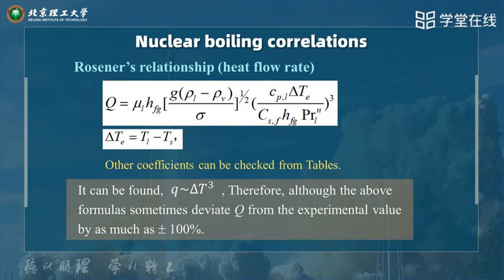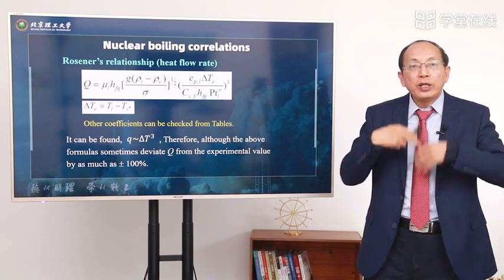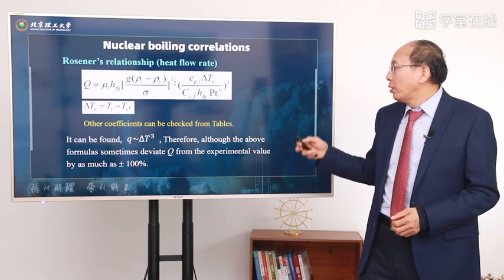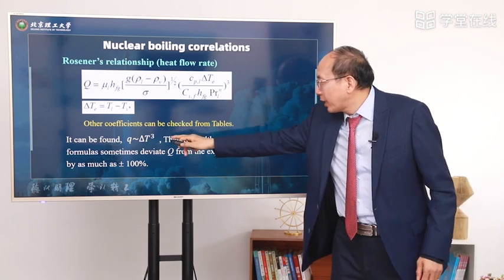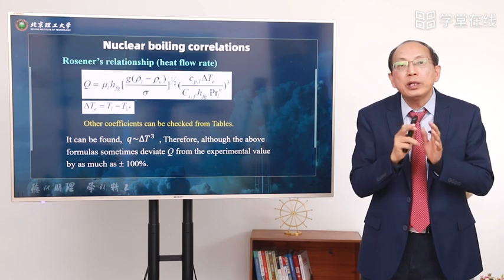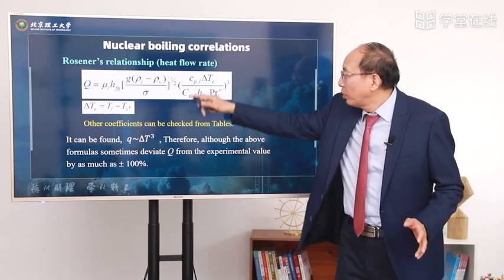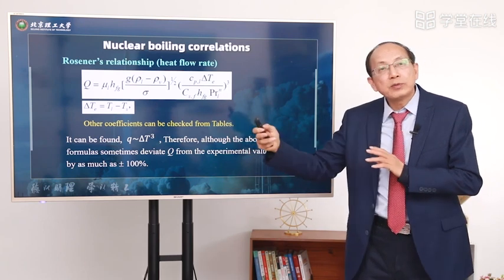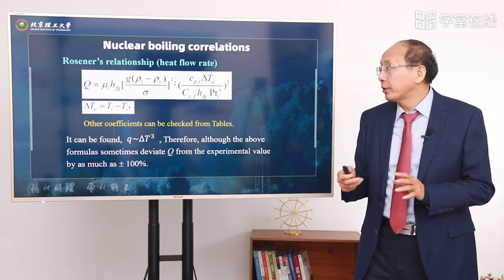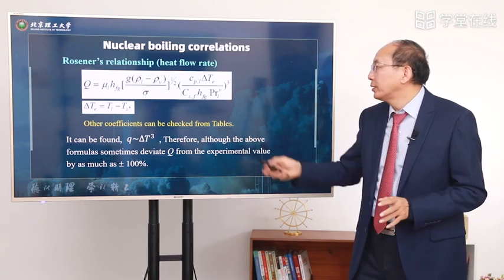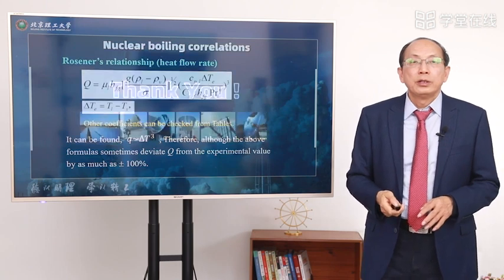From the equation, Q is proportional to ΔT to the third power. Although this equation sometimes yields a deviation from experimental values larger than 100% for Q, if we use Q to back-calculate ΔT, the deviation may only be around 30%. So we can use this equation for simulation to obtain Q or ΔT.